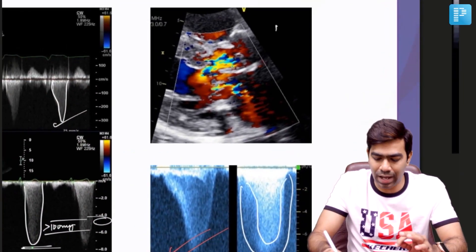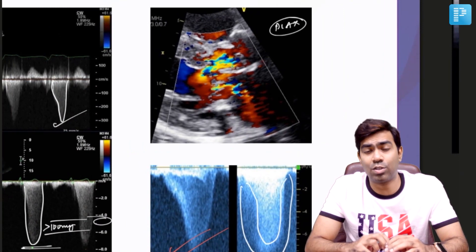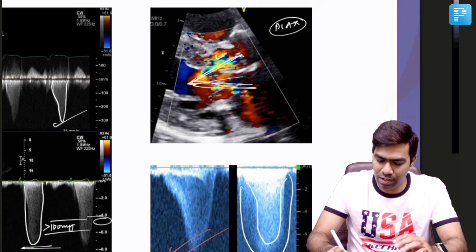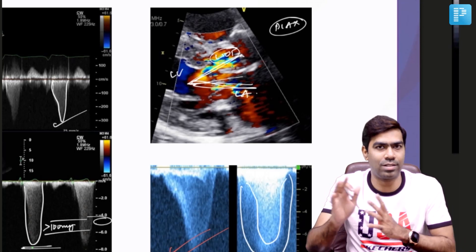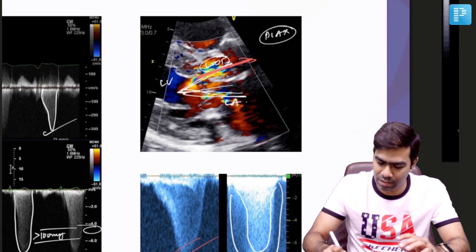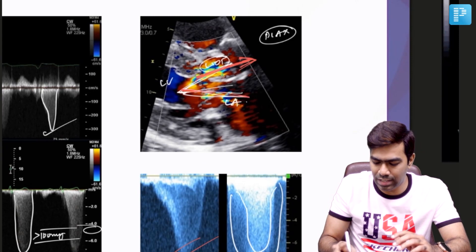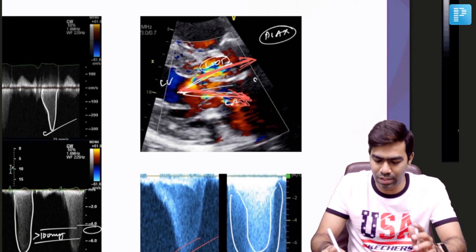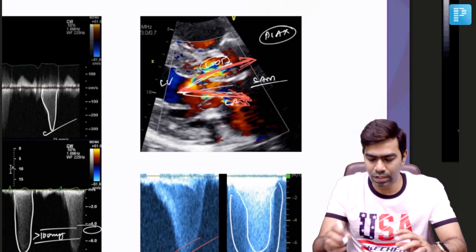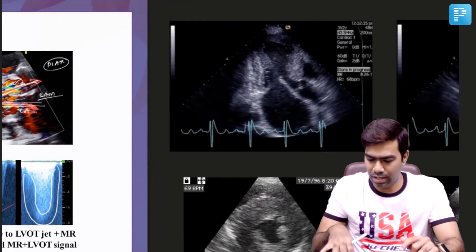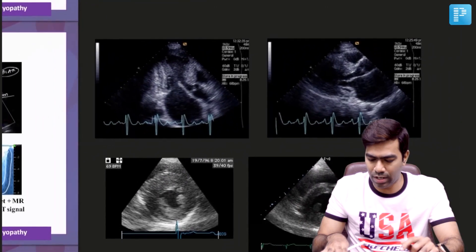One characteristic sign seen in the parasternal view in HCM patients is the V sign. In the parasternal view, you can see two jets going in two directions: the first jet is the LVOT jet going from the LVOT into the aorta, and the second jet is the MR jet. In this example, the MR jet is directed posteriorly, suggesting that the MR is due to systolic anterior motion of the mitral valve. This is what we refer to as the V sign, commonly seen in the parasternal view.